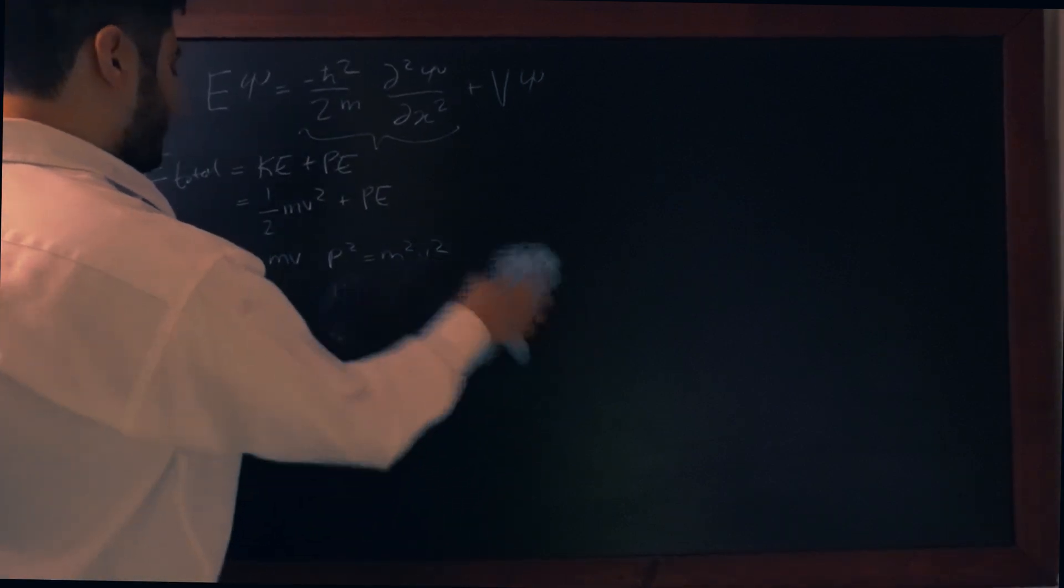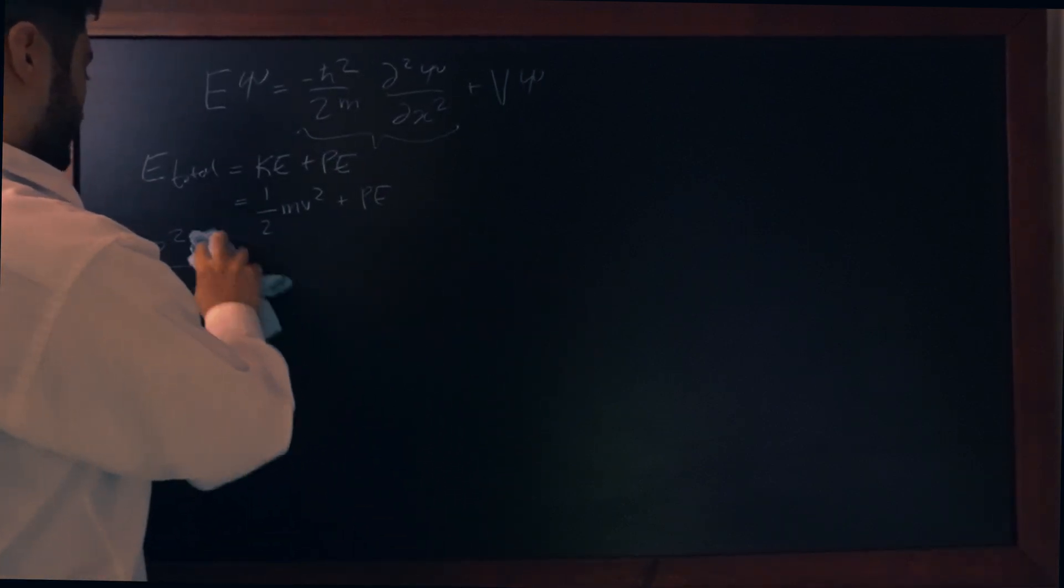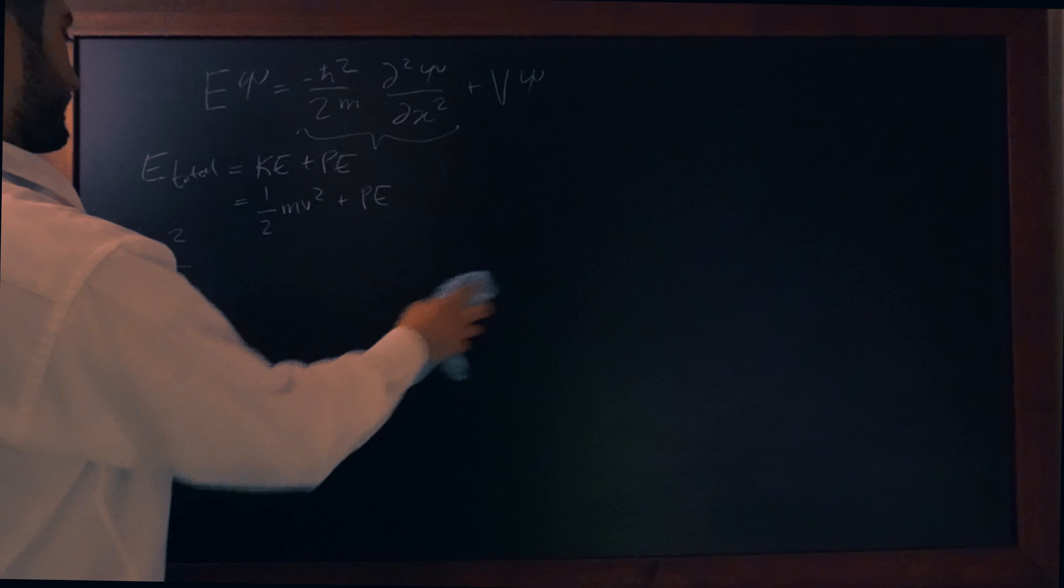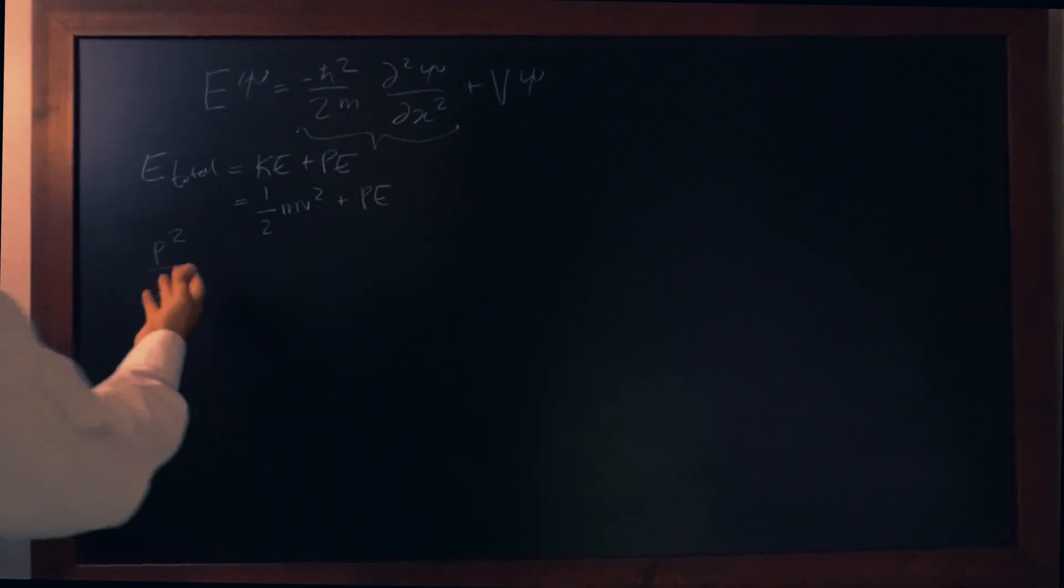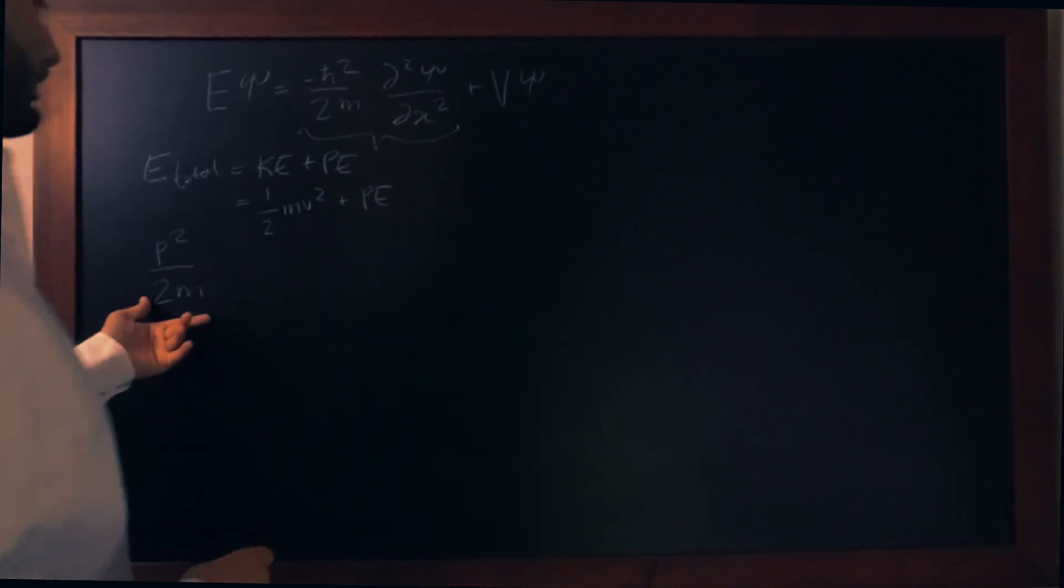Let's get rid of this for a second and stick to where we are with the half mv squared plus PE. And we rewrote that as p squared over 2m.